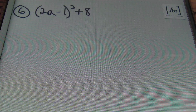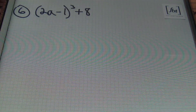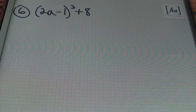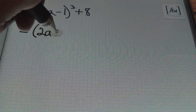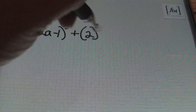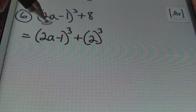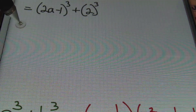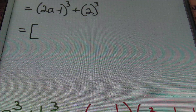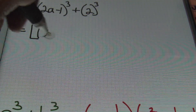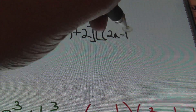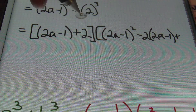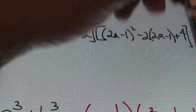Problem number six: the quantity (2a − 1) cubed plus 8. This is a perfect cube — the term being cubed is the binomial (2a − 1), and 2 is being cubed to give 8. So a = (2a − 1) and b = 2. Using brackets for clarity, we get [(2a − 1) + 2] × [(2a − 1)² − 2(2a − 1) + 4].